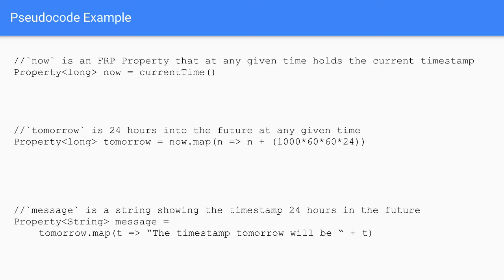We can compose a new property called 'message' from the 'tomorrow' property by mapping over it and interpolating a string. This is pseudocode, but the library I use does refer to that data type as 'property'. Different FRP libraries do have different terminology, unfortunately, but that's what it's called in the one I use.